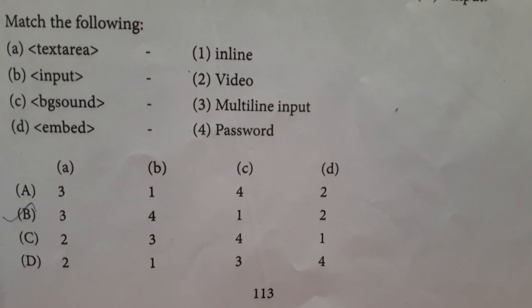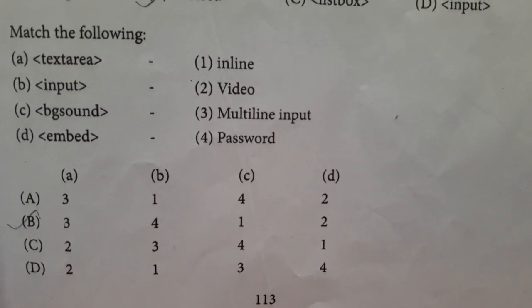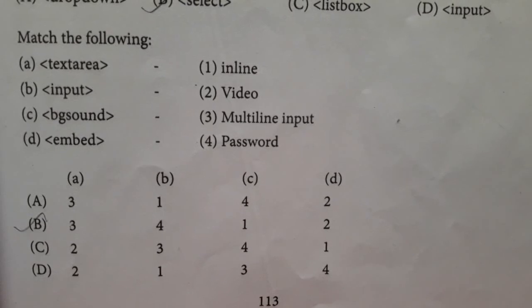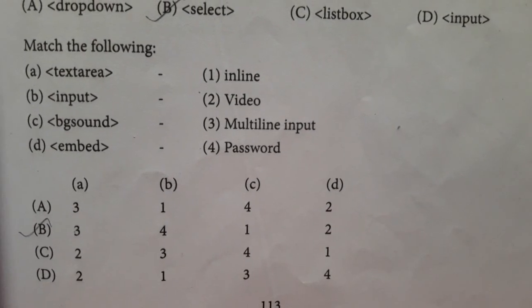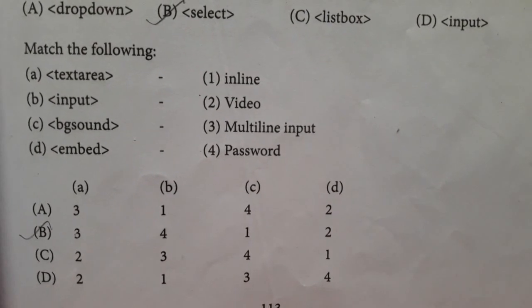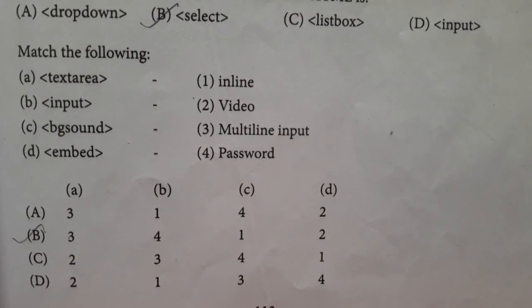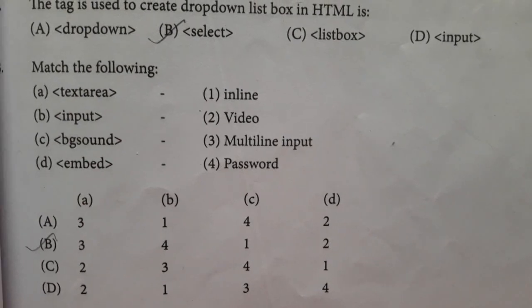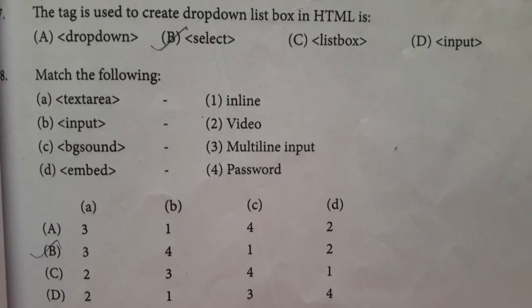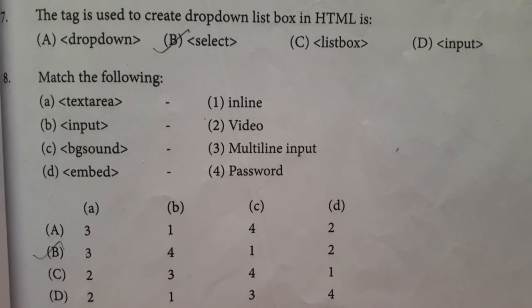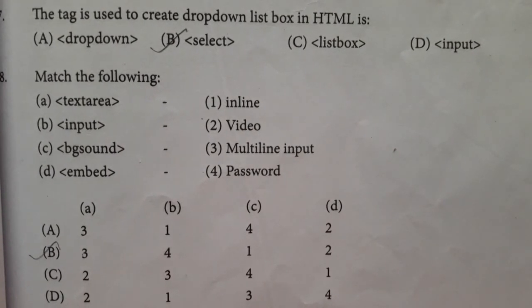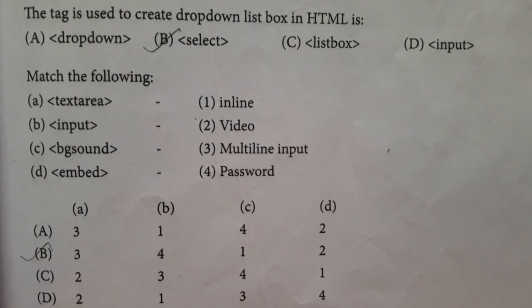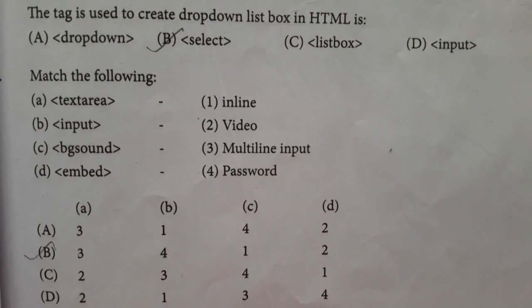And we have the options like Option A 3142, B 3412, C 2341, D 2134. Now we will see the answer. Answer is Option B, 3412. A is 3, so text area is multiline input. Then B is 4, input is password. C is 1, BG sound is inline. Then D is 2, embed is video.